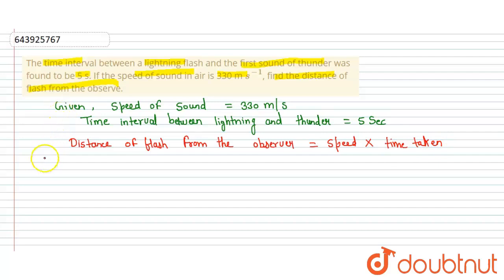Now we will put all the values that are given in the question. So the distance becomes 330 into 5, which equals 1650 meter. So this is the distance of flash from the observer. Thank you.